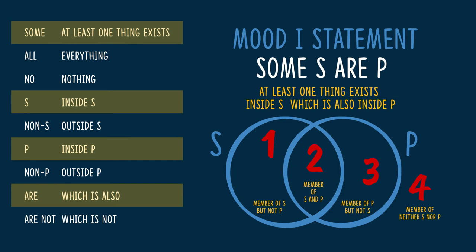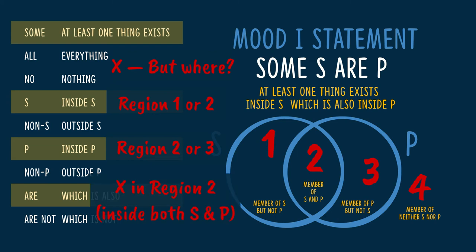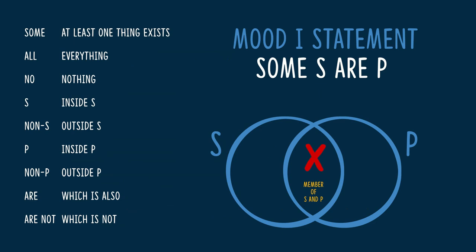Now let's put those together. Instead of saying some, S, R, P, we think about it in terms of the diagram and say: at least one thing exists inside of S, which is also inside of P. This is pretty easy to diagram. We're dealing with a particular, not a universal claim, so we will be putting an X somewhere. At least one thing exists inside S, so the X will go inside either region 1 or region 2, because those comprise the S circle — which is also inside P. That restricts us to region 2 or 3, as those are everything in P. The only region that is inside S and inside P is region 2, so we know the X goes there.